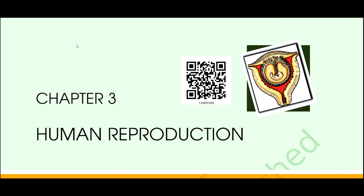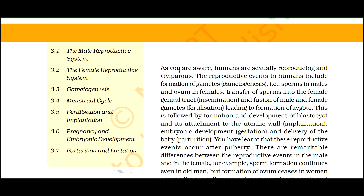Chapter 3: Human Reproduction. As you are aware, humans are sexually reproducing and viviparous. The reproductive events in humans include formation of gametes — sperms in males and ovum in females — transfer of sperms into the female genital tract, and fusion of male and female gametes leading to formation of zygote. This is followed by formation and development of blastocyst and its attachment to the uterine wall, which is implantation, embryonic development which is gestation, and delivery of the baby which is parturition. These reproductive events occur after puberty.